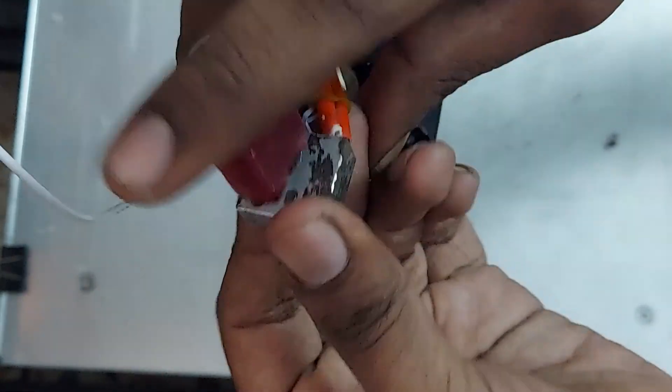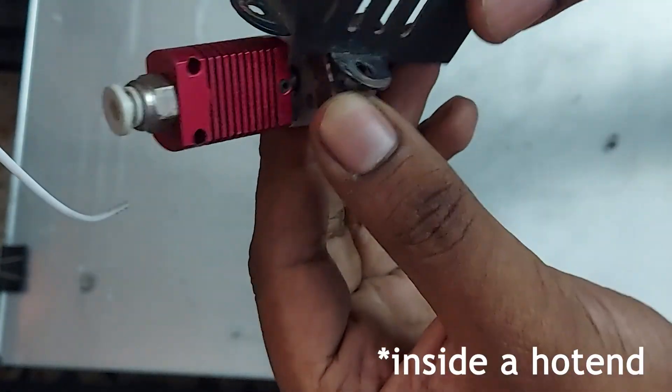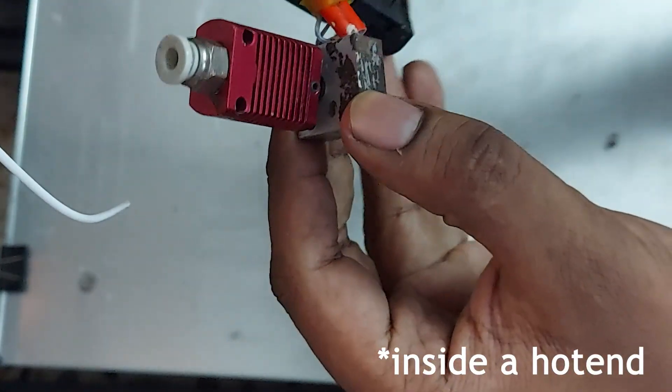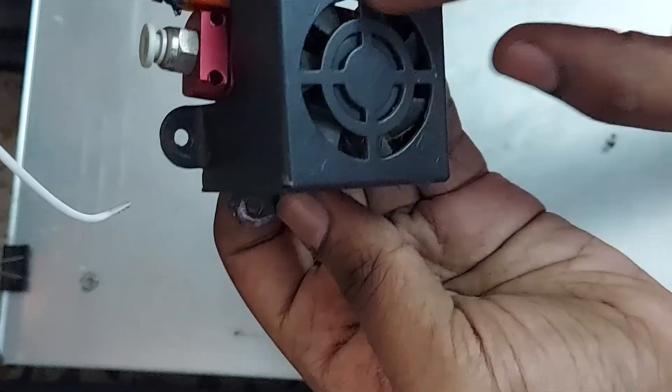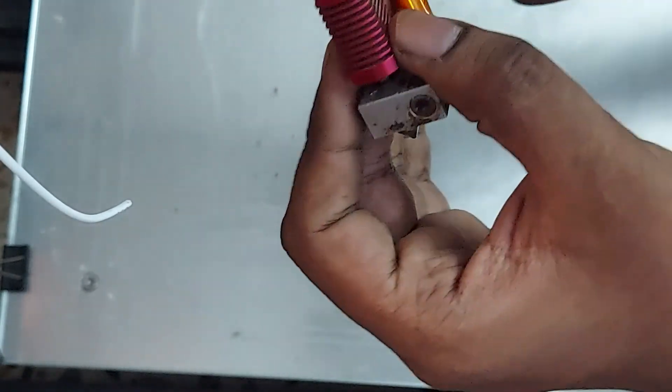This is what's inside the heater block and fans. There were two fans here which help to cool down the heater block and heat shrink and dissipate heat properly.